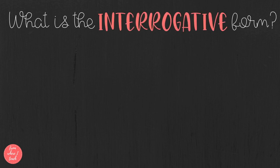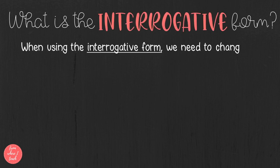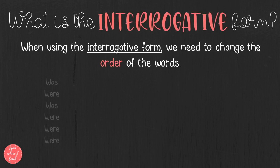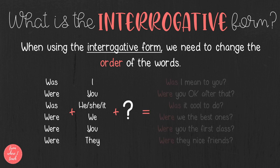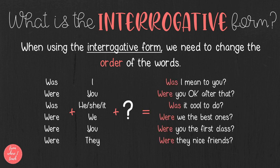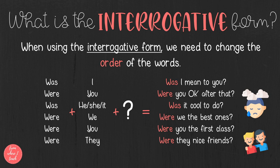To make the interrogative form of the verb to be, we need to change the order of the words. For example: was I, was she, were we — followed by a question mark. For example: Was it cool to do? Were you the first ones? Were they nice friends?